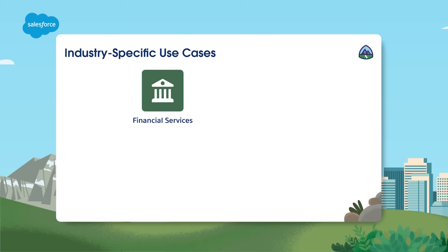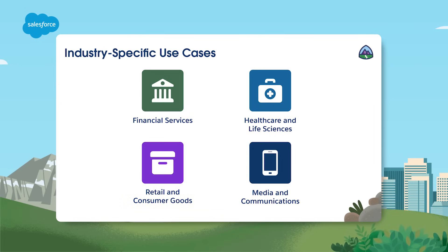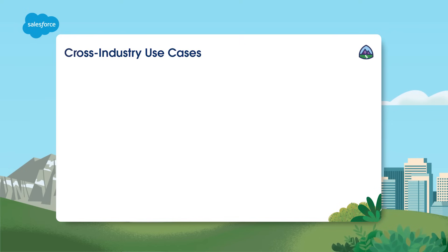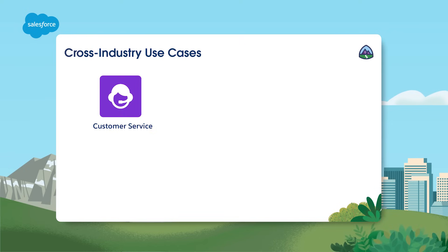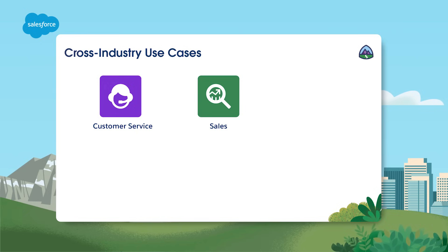Data Cloud provides the unified platform for businesses across various sectors to manage, harmonize and use data effectively. The issues you see here are common across many industries. For example, customer service teams use Data Cloud to solve a customer's case by accessing a customer's real-time unified profile, including information about their past service interactions, marketing engagements and even their loyalty or lifetime value scores. Sales teams drive better informed sales conversations and recommend the next best products using the customer's unified profile powered by Data Cloud.